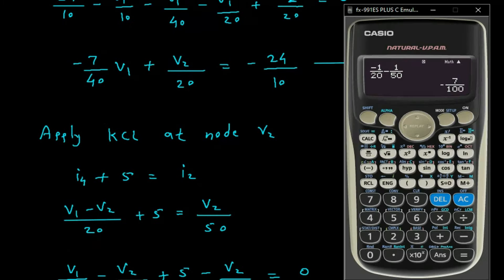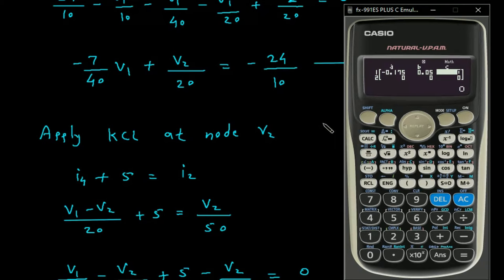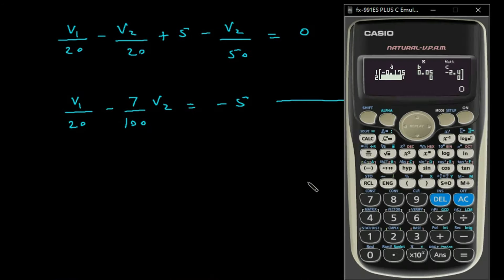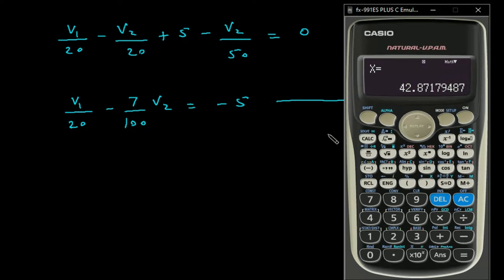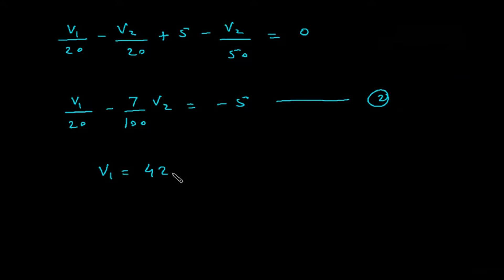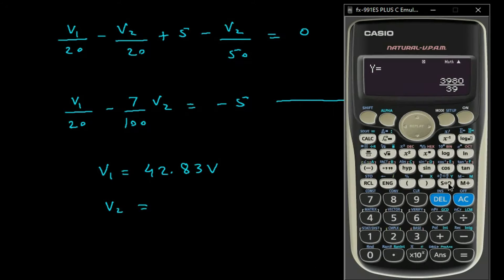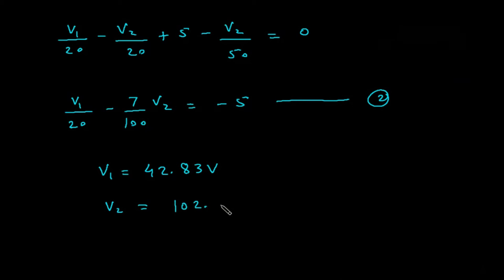Solving equations 1 and 2 using the matrix method: the coefficient matrix is [−7/40, 1/20; 1/20, −7/100] with constants [−24/10; −5]. Solving gives V1 = 42.83 V and V2 = 102.05 V.